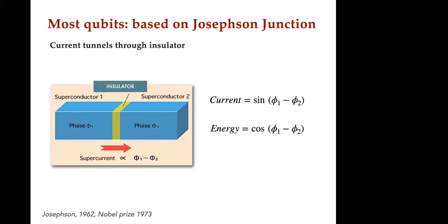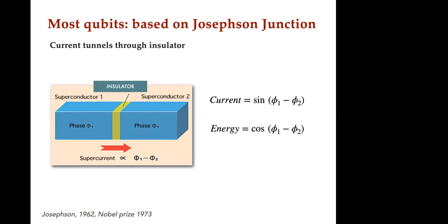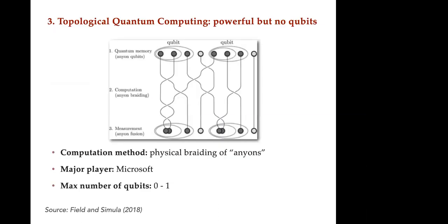Most qubits are based on something called the Josephson junction, discovered by Josephson in 1962, for which he later received the Nobel Prize. The basic idea: you have two superconductors with an insulator between them, and the superconducting current tunnels through. Each superconductor is characterized by a phase phi_1 and phi_2. The current is proportional to the sine of the phase difference and the Hamiltonian is the cosine of the phase difference. This is at the heart of most superconducting approaches today — D-Wave, Google, IBM.